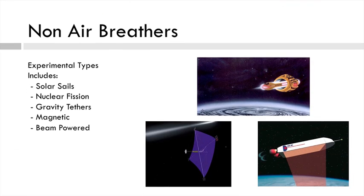The experimental non-air breathers include solar sails, nuclear fission, gravity tethers, magnetic, and beam-powered propulsion. They might all sound a bit like science fiction, but they've been used in various experimental craft over the last few years, and there's still a lot of ongoing research into them.